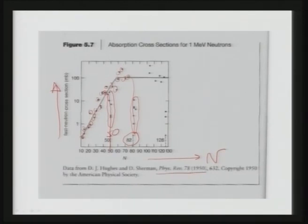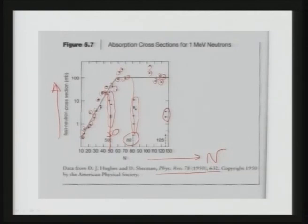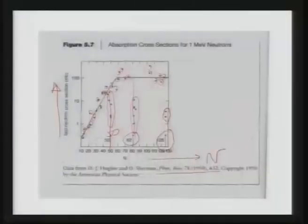These are all experimental results from Physical Review, volume 78, 1950. The absorption cross section drops suddenly at N = 50, rises again, then drops at N = 82, and drops again at N = 126, confirming the shell closure at these numbers.